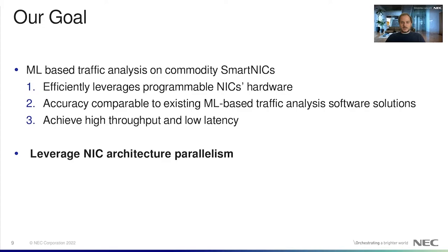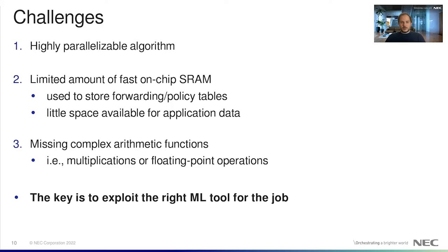We have three main challenges. First, to achieve high throughput and to fully utilize all compute resources on a NIC, the application logic needs to be highly parallelized. Second, existing programmable NICs have at most a few tens of megabytes of fast on-chip SRAM memory. Most of this memory, though, is needed to store forwarding and policy tables, leaving little space available for application data. This makes it hard to implement machine learning models within the NIC, often requiring trading of model complexity for memory utilization. Finally, some machine learning models require complex arithmetic functions, such as multiplication or floating-point operations, which usually are not available on programmable NICs.